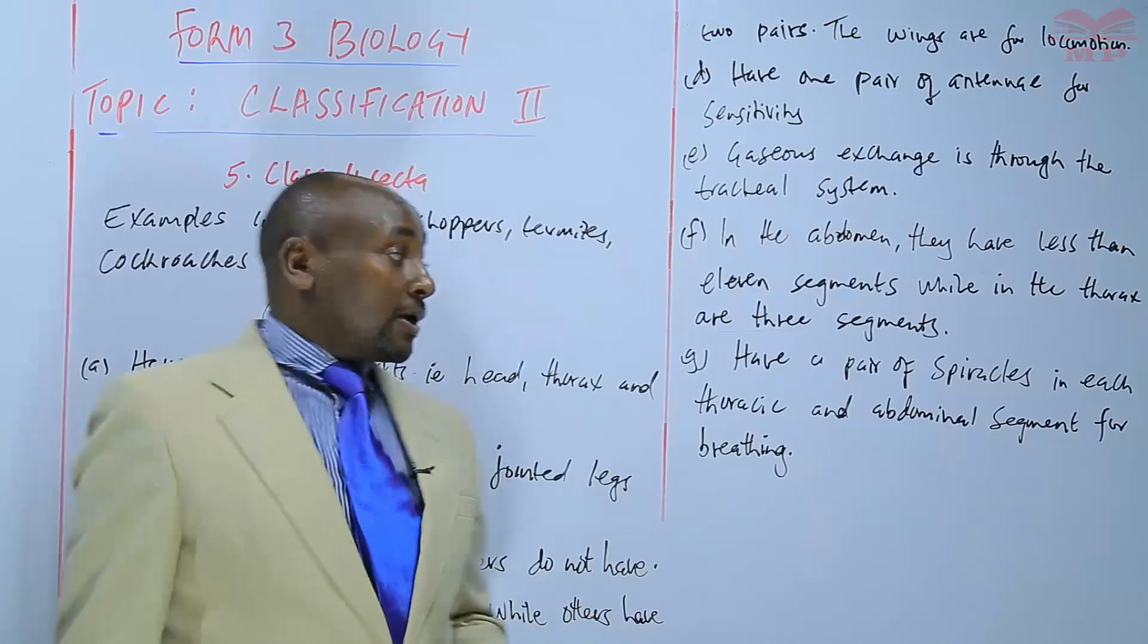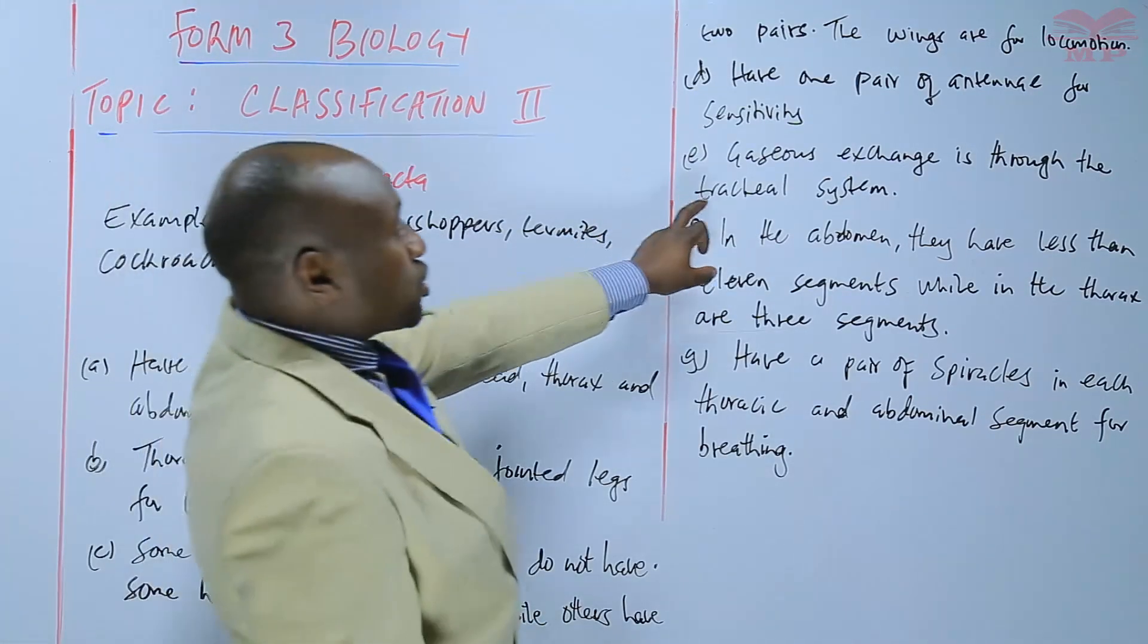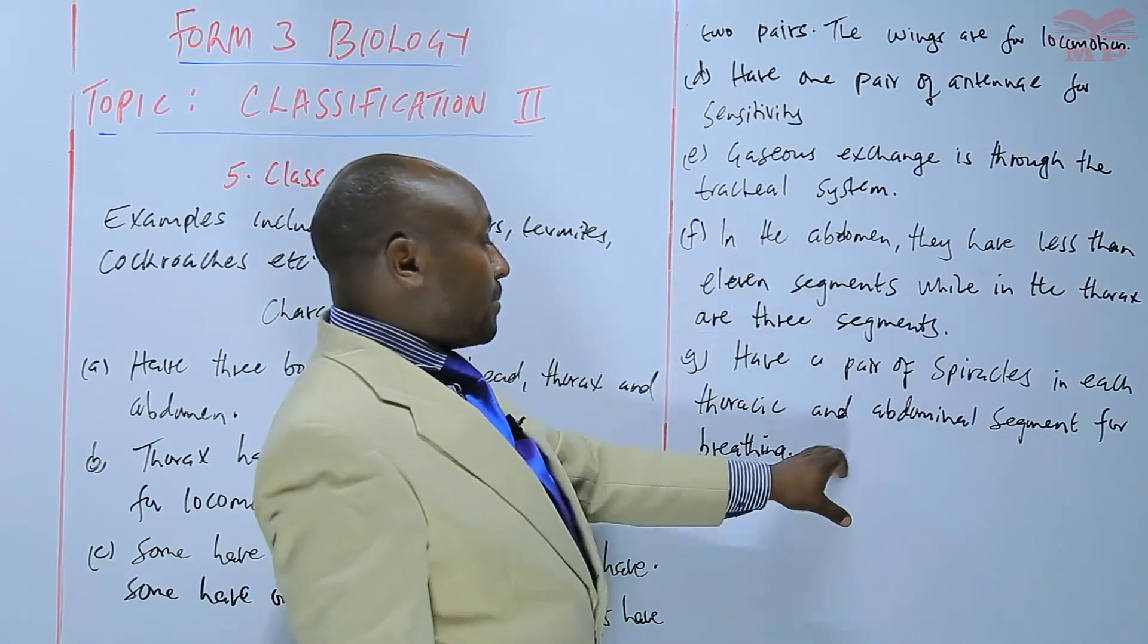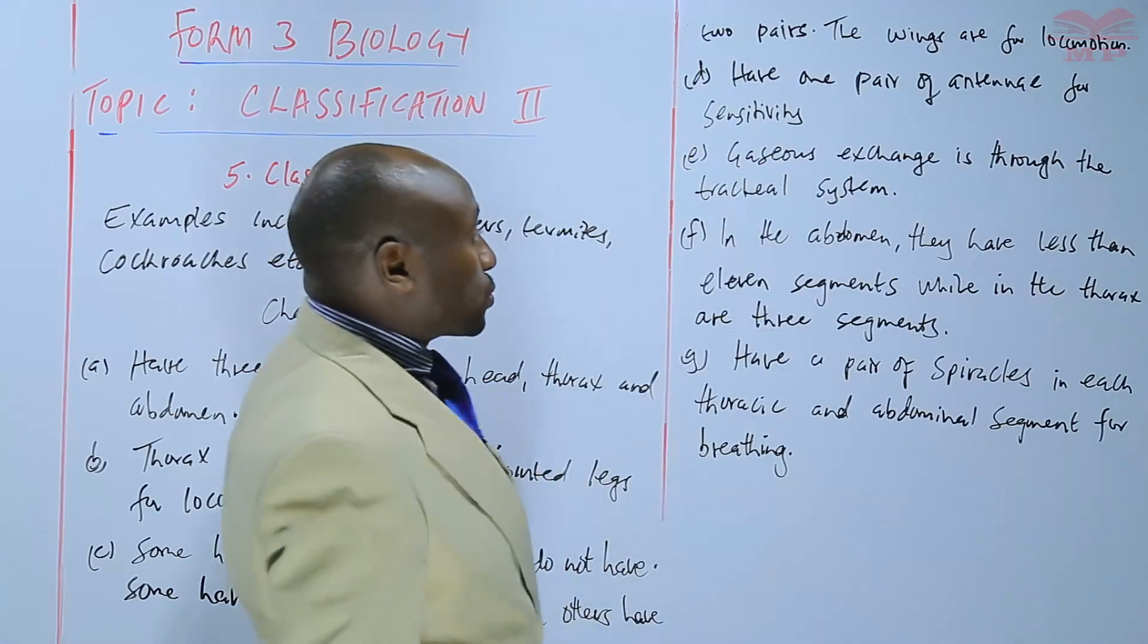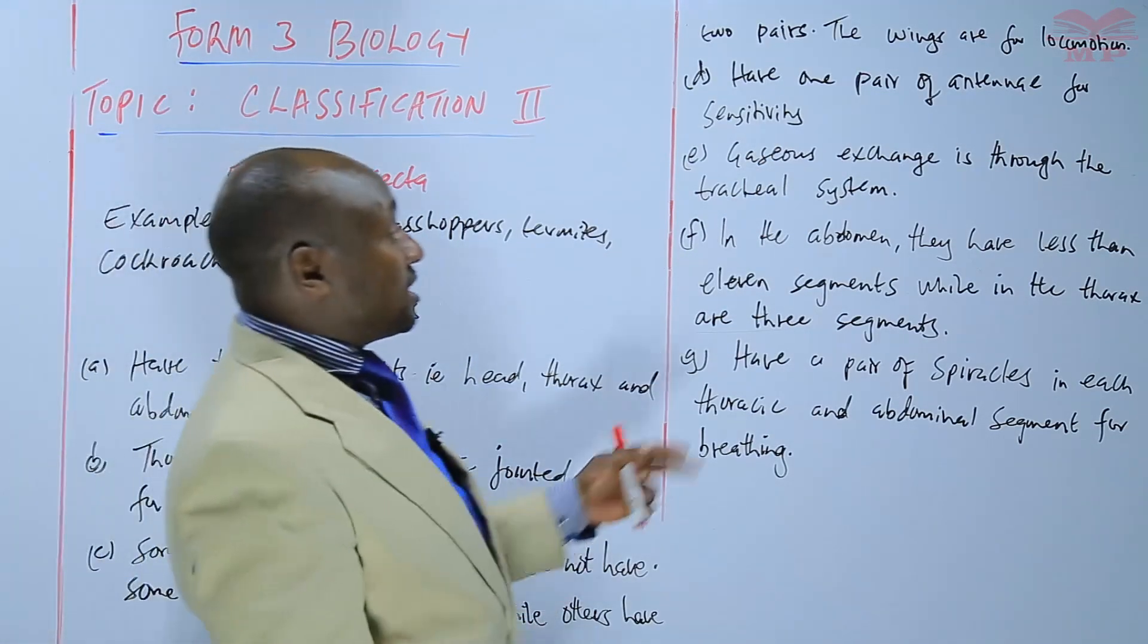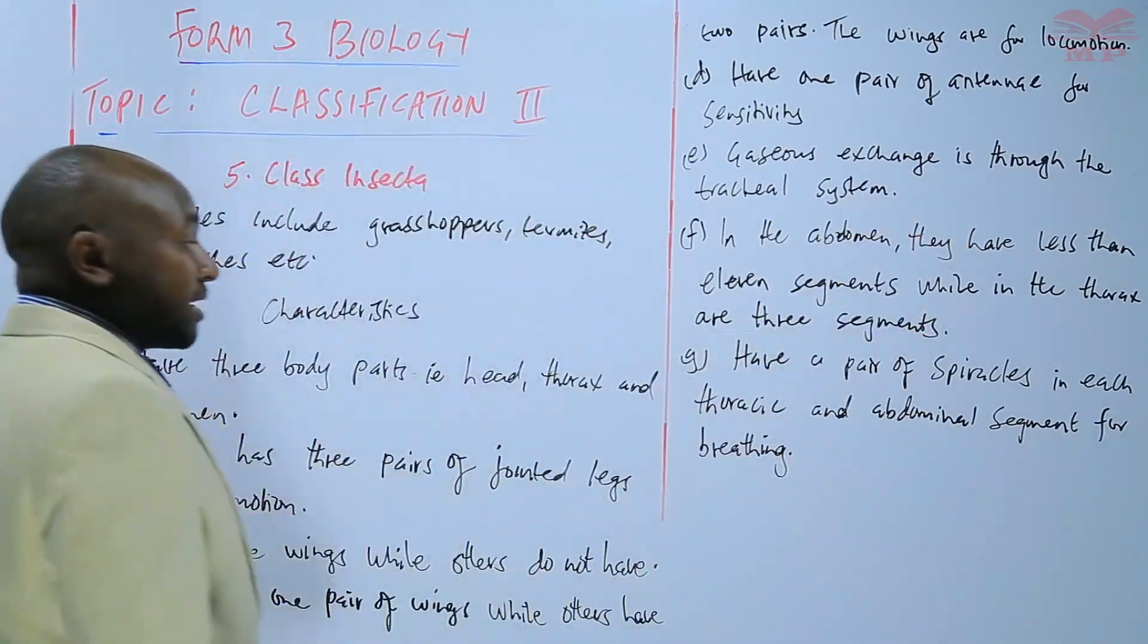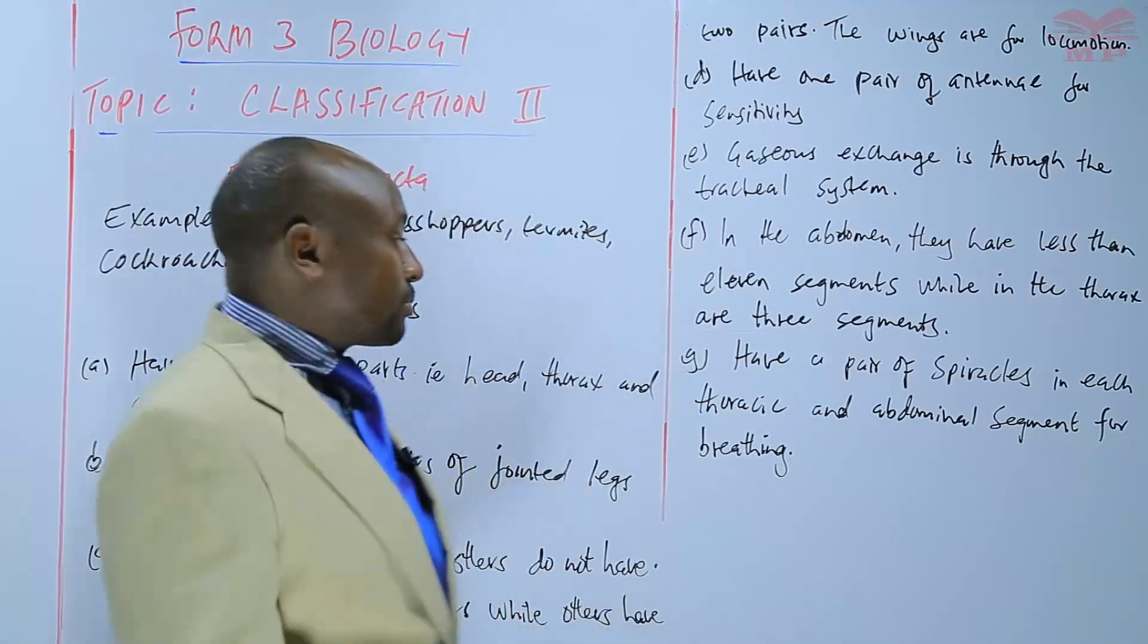So breathing, that is the entry of air from the atmosphere into the insect's body and also from the insect's body to the atmosphere, is through the spiracles. But gaseous exchange is across a respiratory surface, but breathing is between the organism and its surroundings, that is the atmosphere.